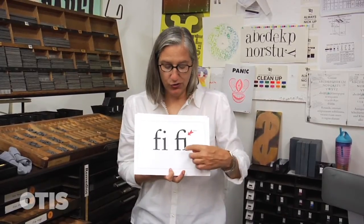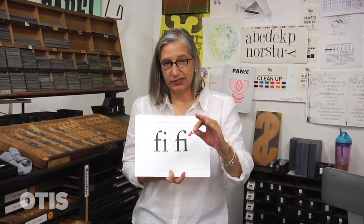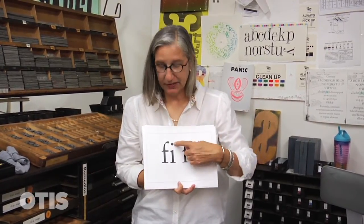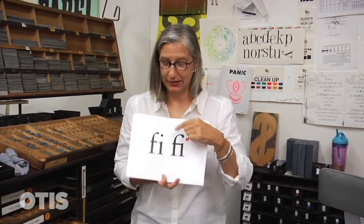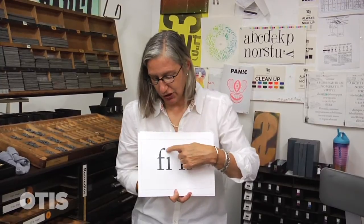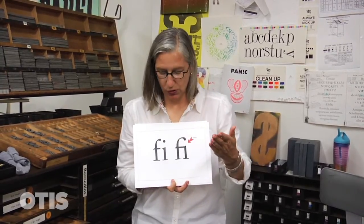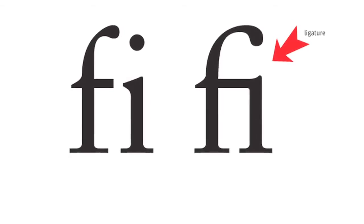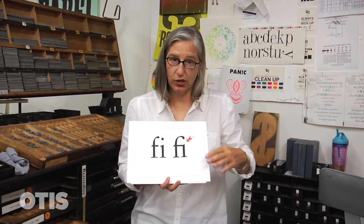Ligatures are letter forms that are connected. The reason that they exist is because sometimes when you put certain letters together, they create weird spaces or weird looks. The serif on the F is conflicting with the tittle on the I — that's a freebie: tittle. I learned that on Jeopardy. And they fight with each other, and if you get them any closer, it gets worse. So ligature figured them out — the serif becomes the tittle of the I, and they sit nicely next to each other.